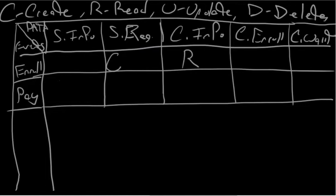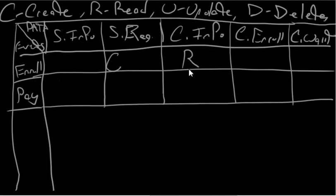Next, the system checks to see if there is actually room for the student in one section of the course. Where does it check for room? The course enrollment database — because it says that's where the number of sections in the course are stored and the number of students presently enrolled. So it's going to have to Read the course enrollment database.